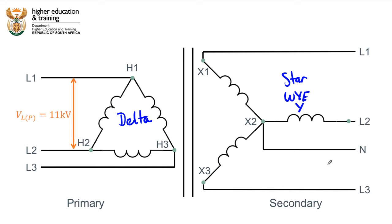They tell us there is a primary line voltage of 11 kilovolts. Note the nomenclature: 'voltage line primary' is a very standard way to label this so you don't get your different values confused. They also tell us that this transformer is a 50 to 1 turns ratio — every 50 turns on the primary side has one turn on the secondary side.